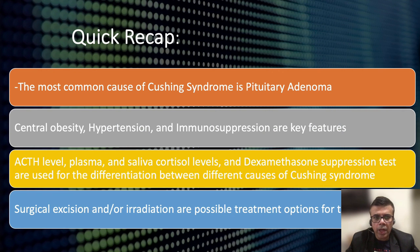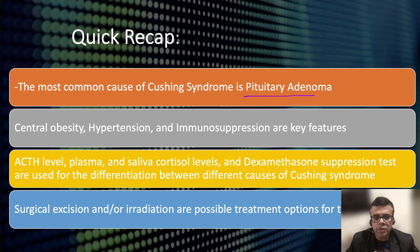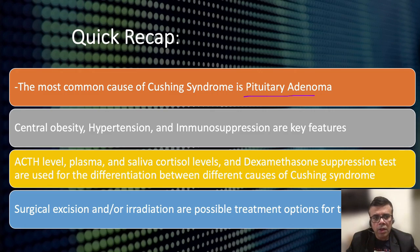In summary, the most common cause of Cushing syndrome is pituitary adenoma, also known as Cushing's disease. Key features include central obesity, hypertension, and immunosuppression. ACTH levels, plasma and saliva cortisol levels, and the high-dose dexamethasone suppression test are used for differentiating among causes. Treatment modalities include surgical excision and irradiation for tumor-related causes.